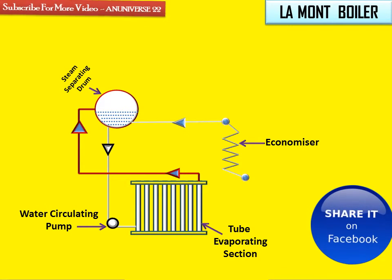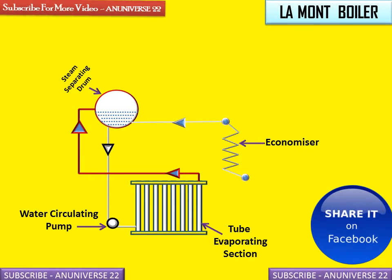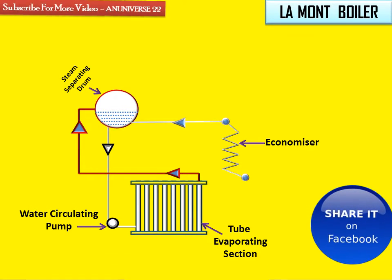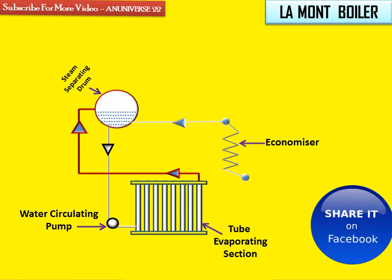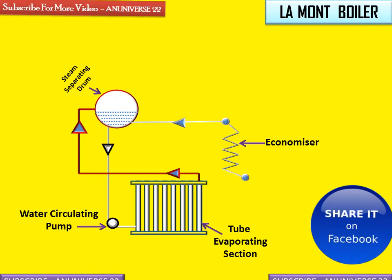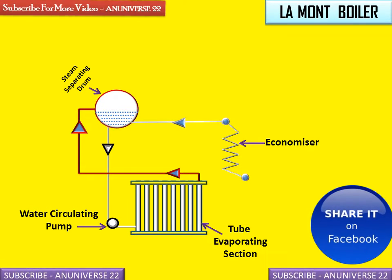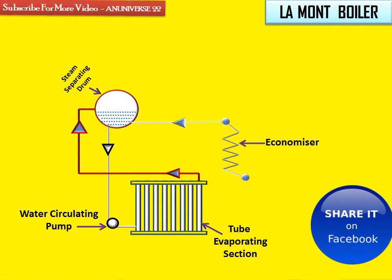This is the water circulating pump. Since the La Mount boiler is a forced convection boiler, a centrifugal pump is used to recirculate water inside the boiler. This pump is driven by the steam turbine, and the steam for the turbine is taken from the boiler itself.